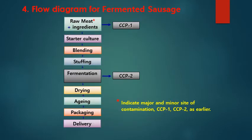For fermented sausage production, the process flow is: raw meat and other ingredients, starter culture, blending, stuffing into casing, fermentation, drying, aging, then packaging and delivery. Raw meat should be kept at appropriate cold or frozen temperature — that is CCP1. Fermentation, where the product is kept for several days at a specific temperature, is CCP2 — the optimum temperature and time are critical.